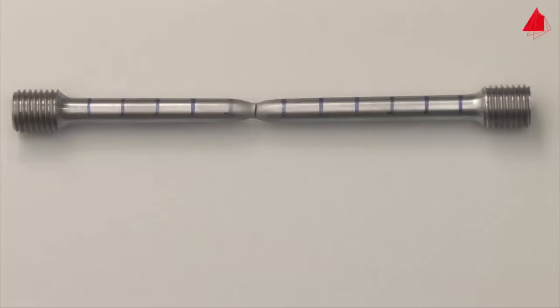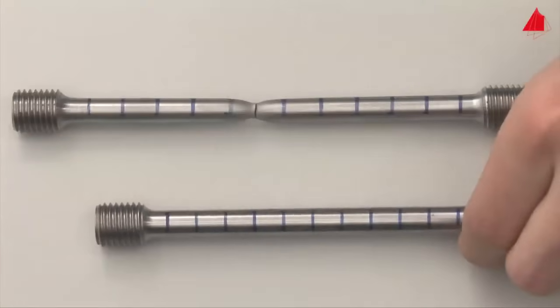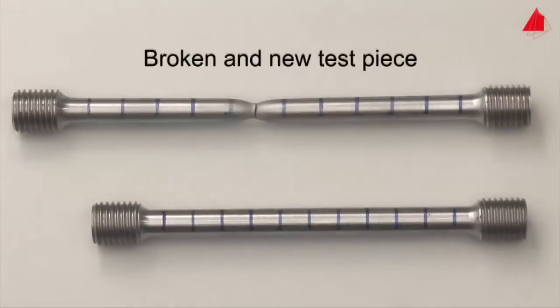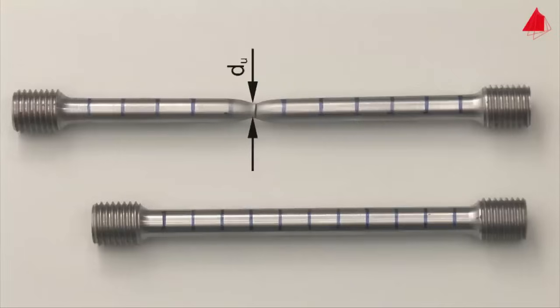With the help of the distance marks, the percentage elongation after fracture can be determined. This is the permanent strain after fracture and amounts to about 30 percent in this example. Please note that the percentage elongation after fracture depends on the length to diameter ratio. By measuring the smallest diameter at the point of fracture, the percentage reduction of area can be calculated. It describes the reduction of cross-sectional area at the point of fracture in relation to the original cross-sectional area.